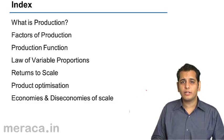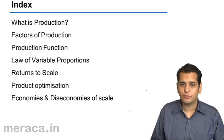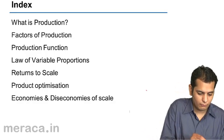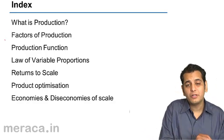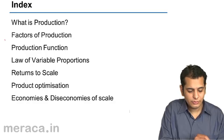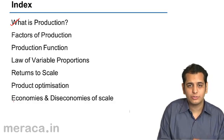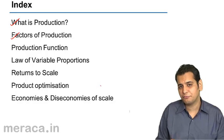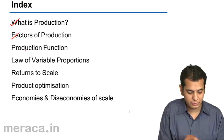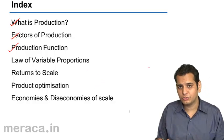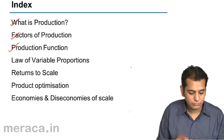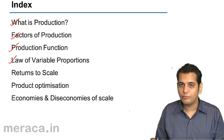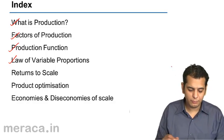Let's just quickly run through our index for this chapter. What we'll do in this chapter is: what is production, second the factors of production, third production function, then we'll do the law of variable proportions.